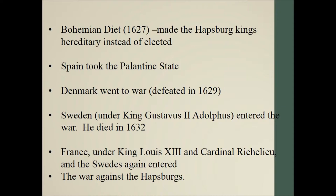Spain got involved primarily to fight in the Palatinate state, territory they really wanted. Sweden got involved primarily worried that the Catholics would gain too much influence. It's at this point when Austria was having a really hard time with the war and decided to give toleration to the Protestants. And it's at this point, when toleration was given, that France gets involved in the war. The King of France was Louis XIII, and his chief advisor was Cardinal Richelieu.